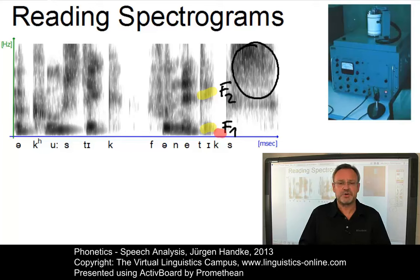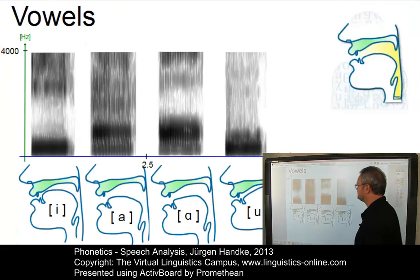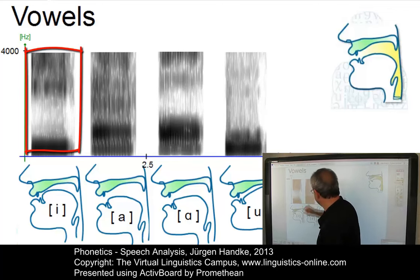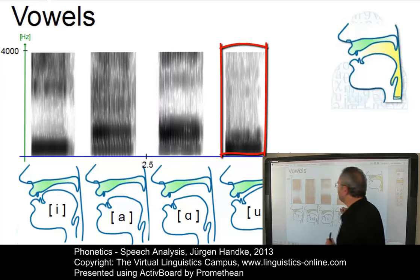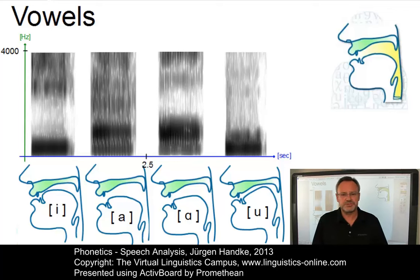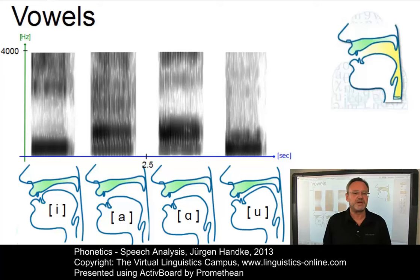Let us look at vowels and consonants in detail, starting with vowels. Here are the spectrograms of four cardinal vowels which I produced earlier: E, A, R, and U. Like all vowels, these can be classified by means of their first two formants — Formant 1 (F1) and Formant 2 (F2). These resonance frequencies can very roughly be associated with the size of specific cavities in the vocal tract.